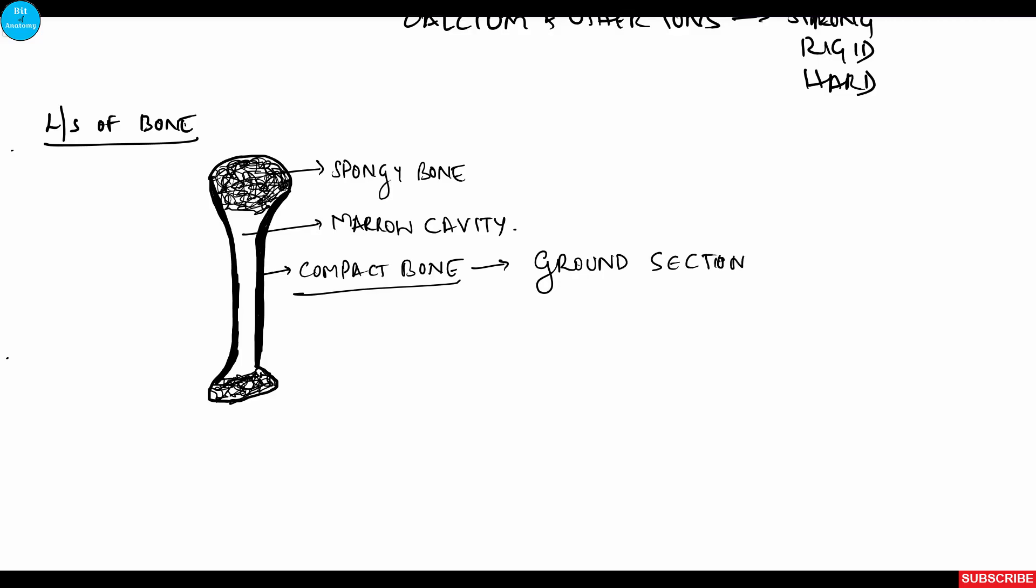In the histology we see ground section of the compact bone. These are not stained with any stain so they are just thinned out and observed under the microscope.